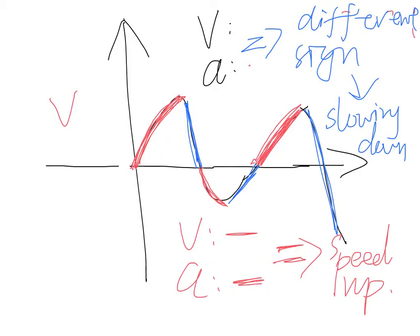I made a mistake when I talked about this graph. When I talked about this graph, I told you here the object is speeding up - that's right. And here the object is also speeding up - that's right. And here the object is also speeding up, because the velocity and acceleration both have negative signs.